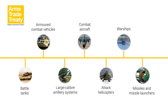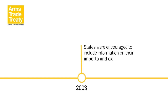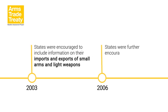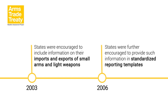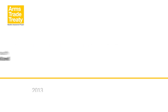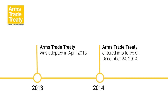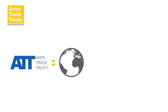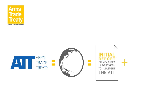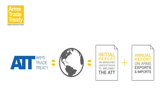In 2003, states were encouraged to include information on their imports and exports of small arms and light weapons, referred to as SALW, and were further encouraged in 2006 to provide such information in standardised reporting templates. In 2016, the group of government experts recommended that states report on SALW transfers alongside the existing seven categories of conventional weapons covered by the Register. The most recent effort at transparency in arms transfers is the Arms Trade Treaty, which was adopted in April 2013 and entered into force on December 24, 2014.